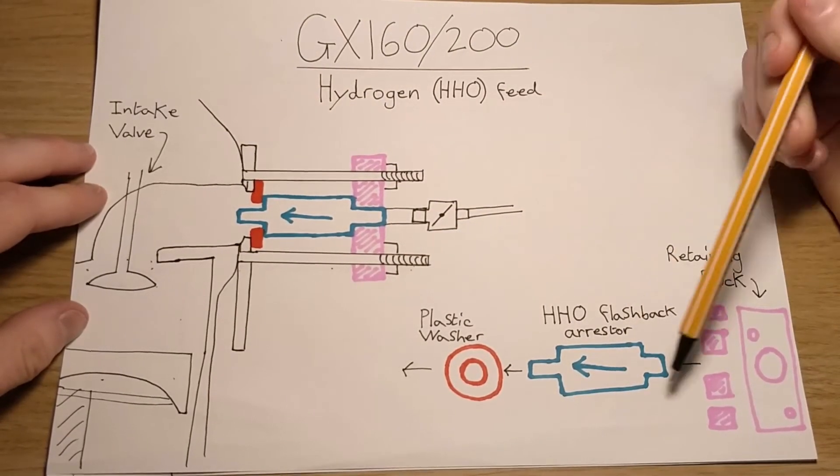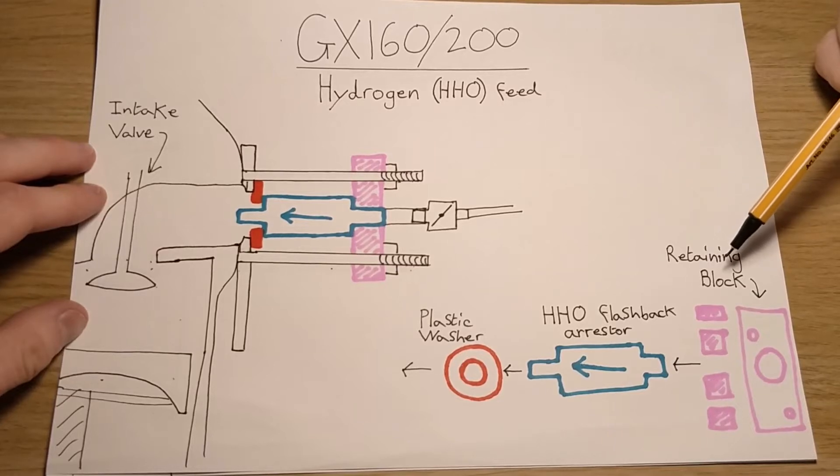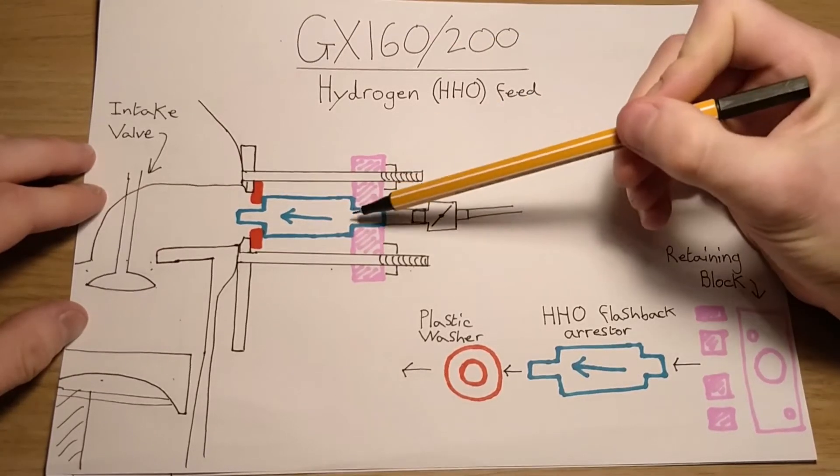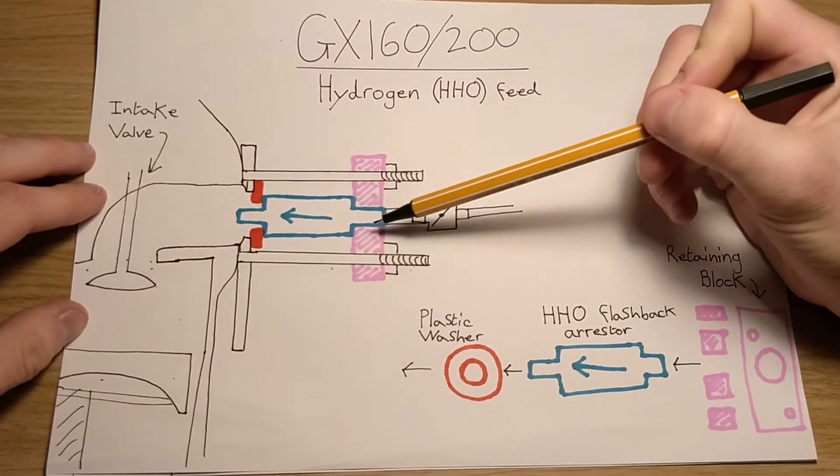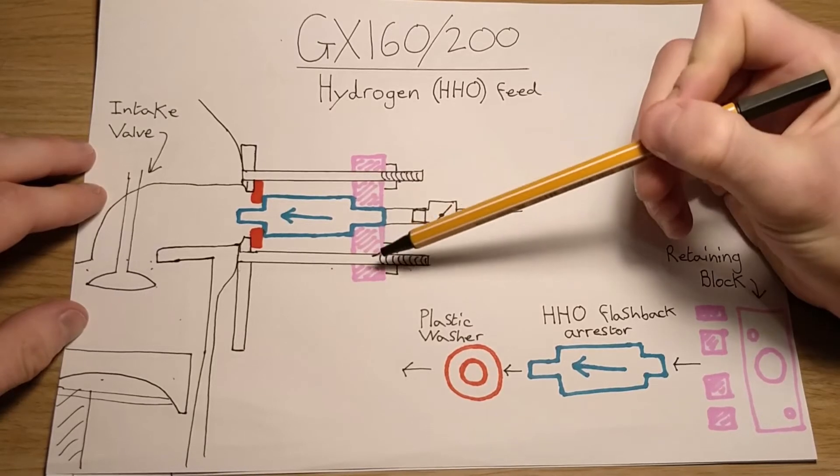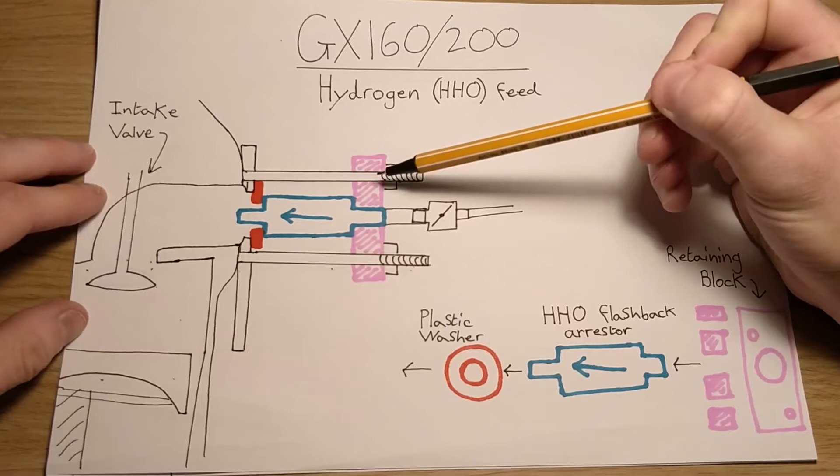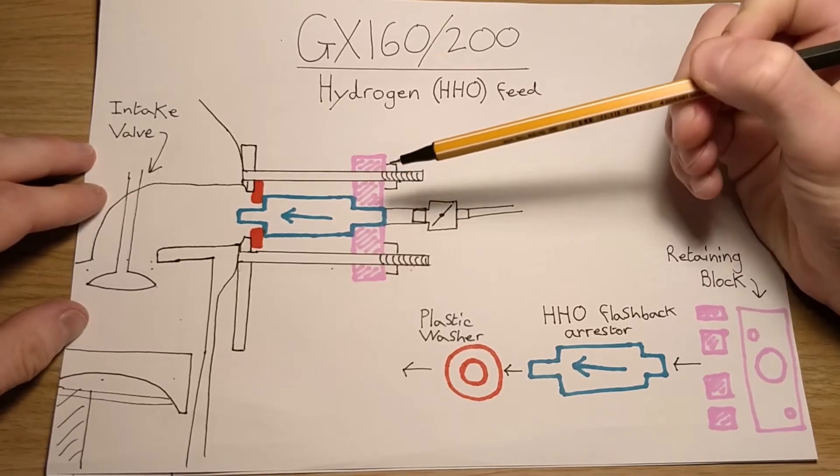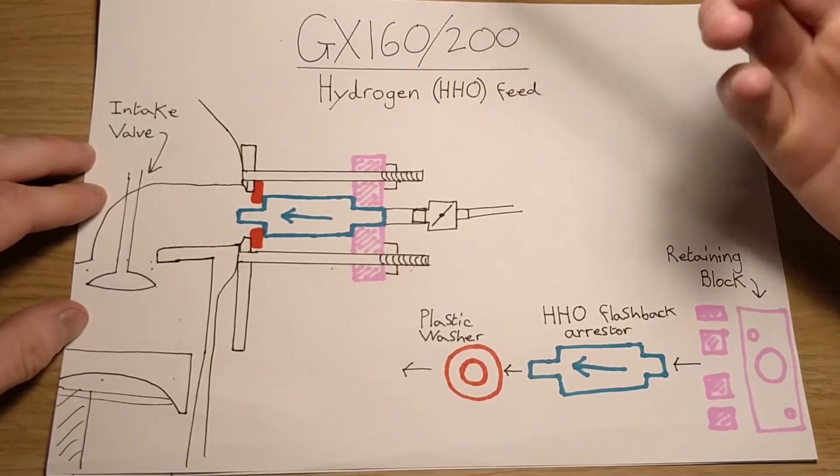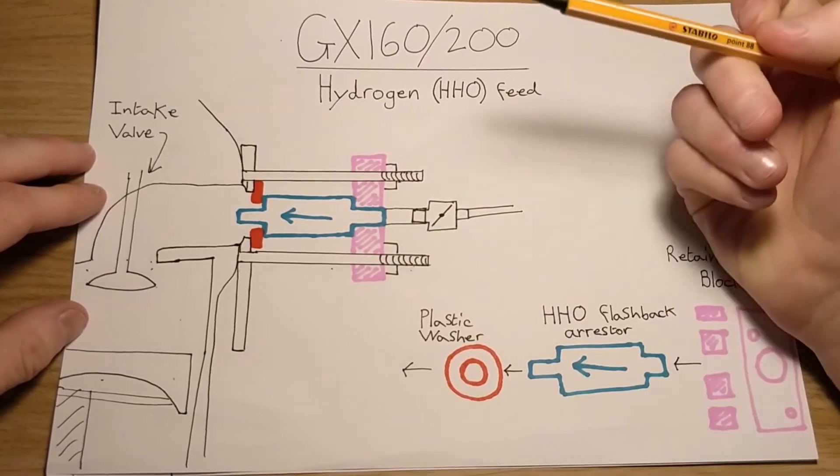So I use the retaining block, which is literally just a block with a hole in the middle so the spout can fit through, and two holes to mount on the engine studs here that usually hold the carburetor on. But as we are not using the carburetor, this can slide over those studs, use two nuts to retain it in place.